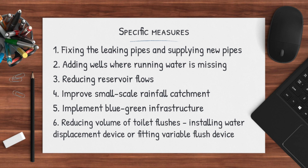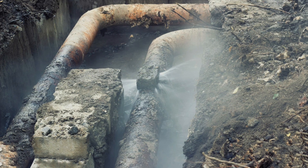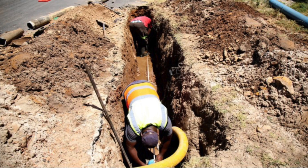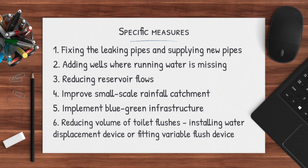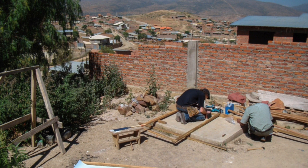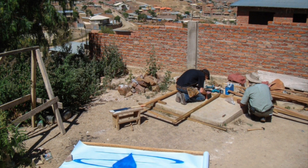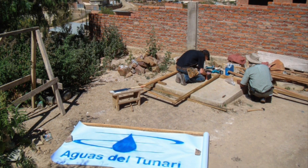Being inspired by Mexico City as our reference city, we thought of some specific measures to implement. Number one is fixing leaking pipes and supplying new pipes, because old water infrastructure has been a problem for municipalities for years in both Mexico City and South Africa. Another specific measure would be adding wells, as water leaks are becoming a bigger cause for concern with municipalities desperately trying to conserve more water in South Africa.